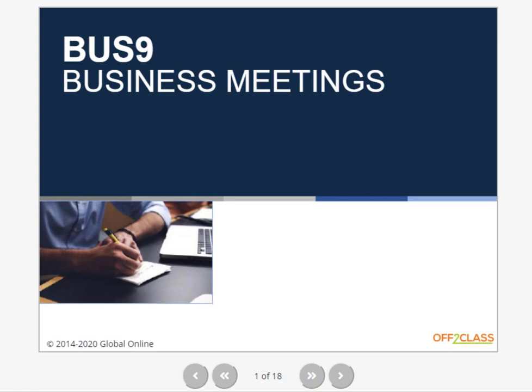Today's Business English lesson is about business meetings. The objectives for today's lesson include using common vocabulary used during different stages of a business meeting, such as introductions, reviewing past business or meeting notes, discussing items, and finishing the meeting. We're also going to introduce common phrasal verbs used in business meetings, such as 'run out of' or 'reach out,' and common expressions used in meetings.